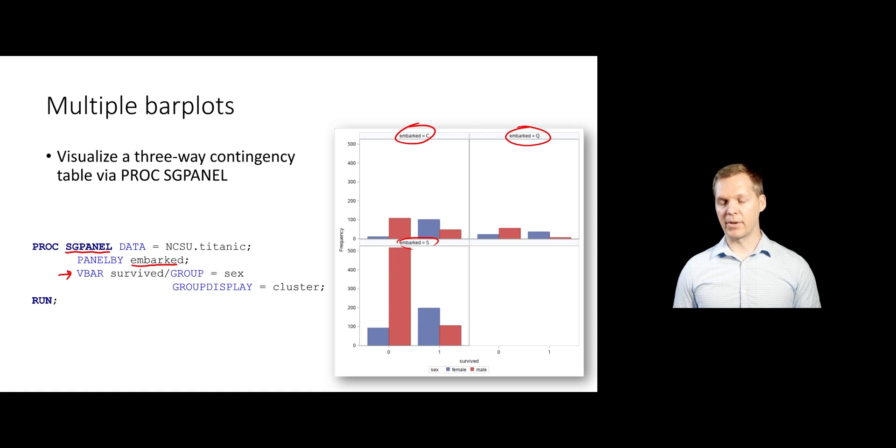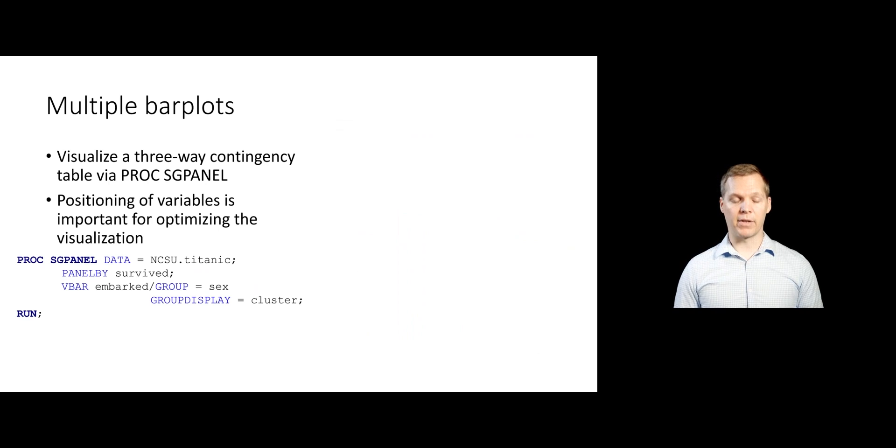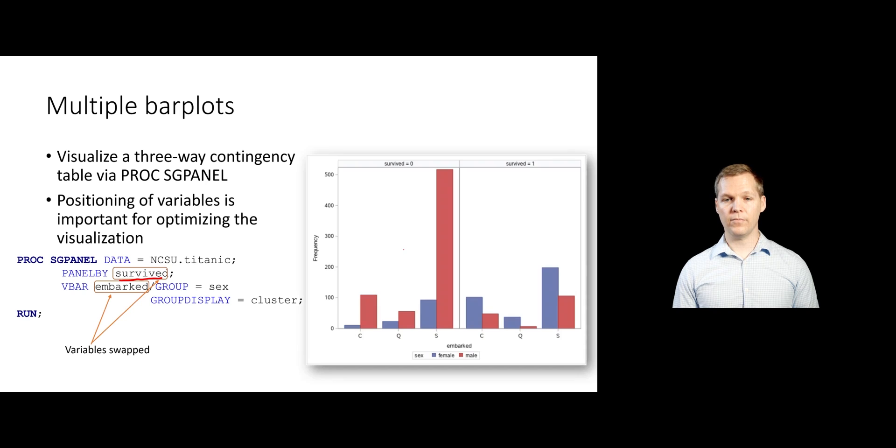And this isn't exactly great. We have this empty plot over here because there was only three levels of embarked. So if you change the ordering of these, so now if I panel by survived instead, and then put VBAR of embarked and sex, I now get something that's much easier to read and much easier to compare. So now we have a very nice visualization of a three-way contingency table through this PROC SGPANEL procedure. That's pretty cool.